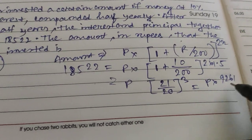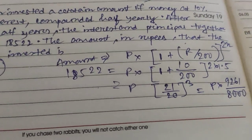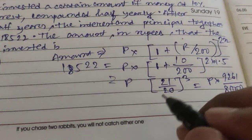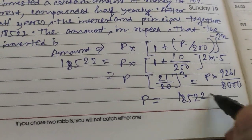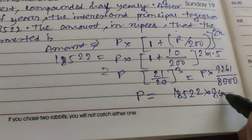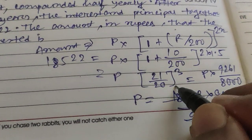divided by 8,000. So P will be 18,522 into 8,000 divided by 9,261.